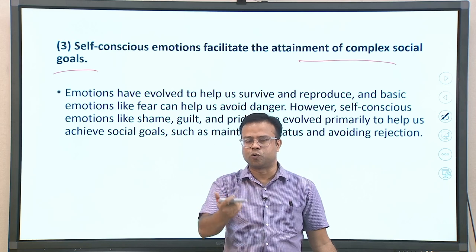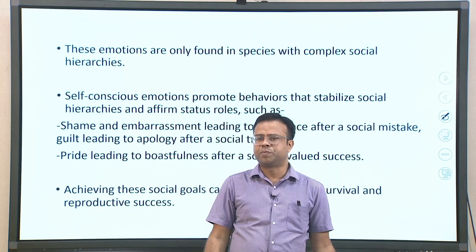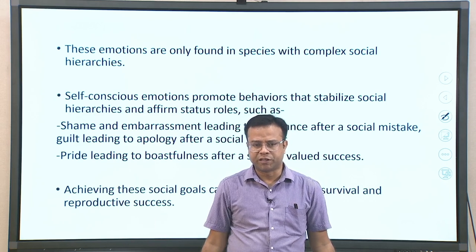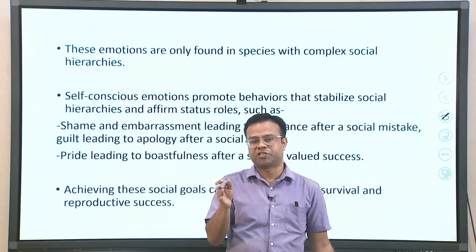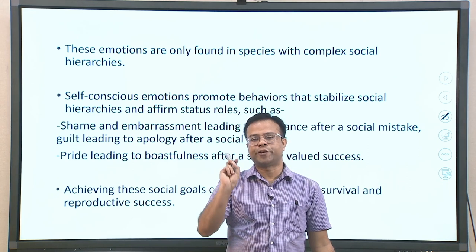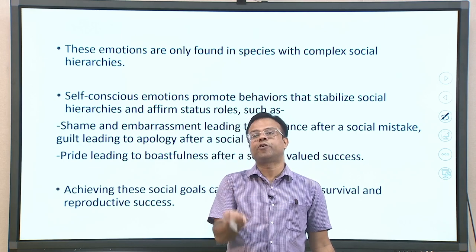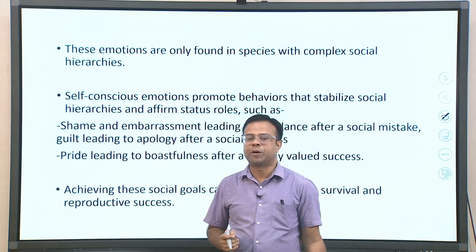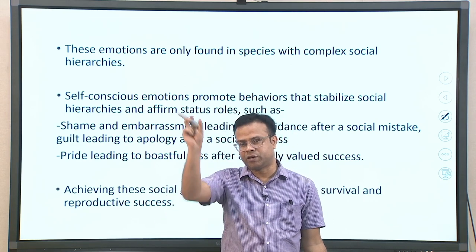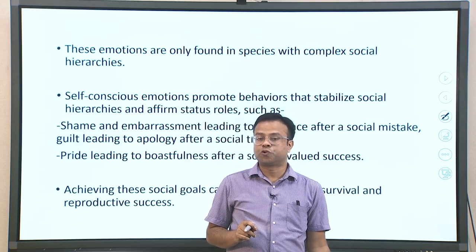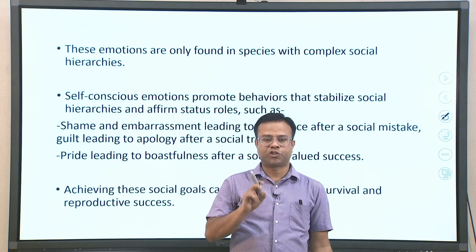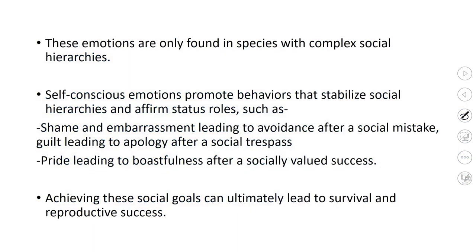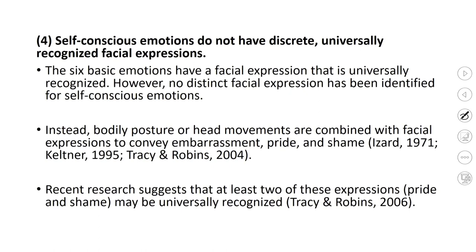These emotions are evidently found in species with complex social hierarchies, like humans and possibly some primates. Self-conscious emotions promote behaviors that stabilize social hierarchies and affirm status roles. For example, shame and embarrassment lead to avoidance after a social mistake, helping us avoid such mistakes in the future. Guilt may lead to apology after a social trespass. Pride leads to boastfulness after a socially valued success. Achieving these social goals can ultimately also connect to survival and reproductive success.